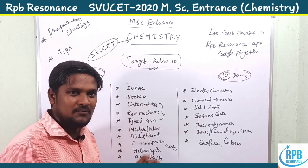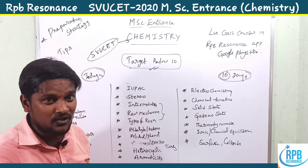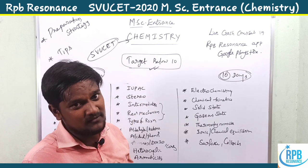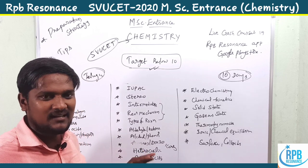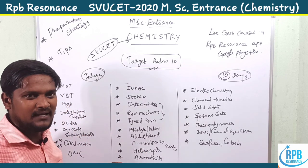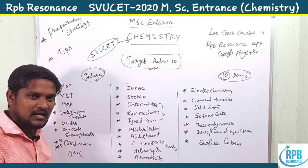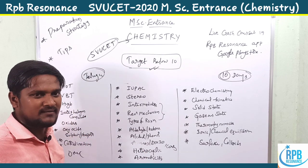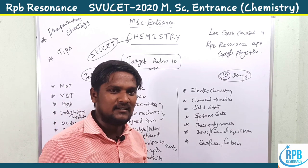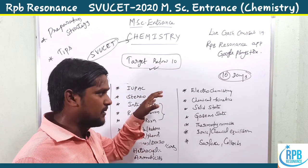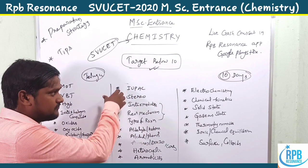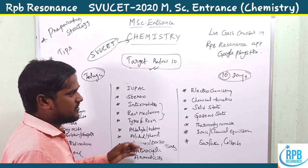In case of organic chemistry, the important topics are: IUPAC, stereochemistry, intermediates, reaction mechanism, types of reactions, aldehydes and ketones, alcohols and phenols, amines, carbohydrates, amino acids, and finally heterocyclic compounds and aromaticity. These are the very important topics for organic chemistry.